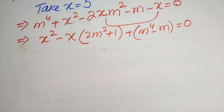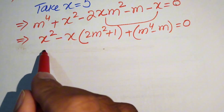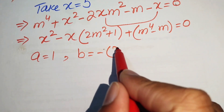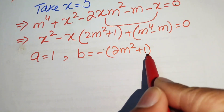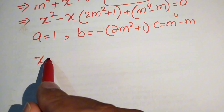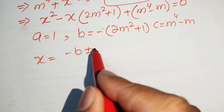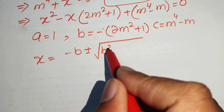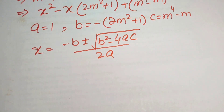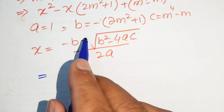This equation is quadratic in the variable x. We use the quadratic formula to solve it. The coefficients are: a = 1, b = -(2m² + 1), and c = m⁴ - m. The quadratic formula is: x = (-b ± √(b² - 4ac)) / (2a).